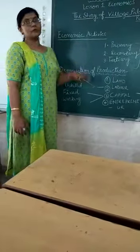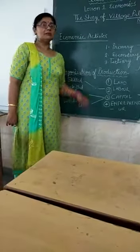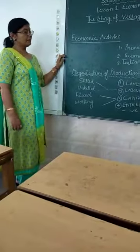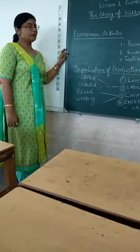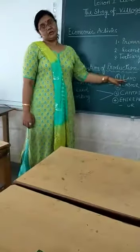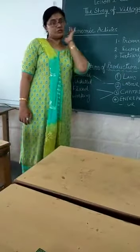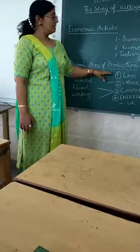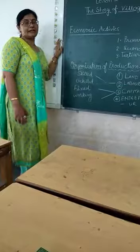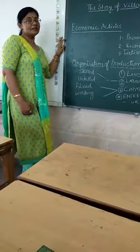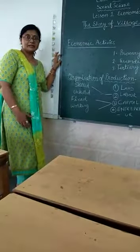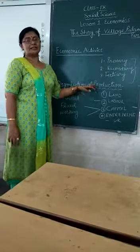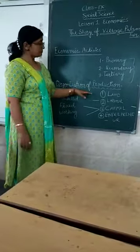The first factor is land. Land is a primary factor for any production. Even if we want to make a school or any organization, we need land. Land is a natural resource and a permanent area. As the population increases, land remains limited. So the products of land are natural resources, and second, it is limited.